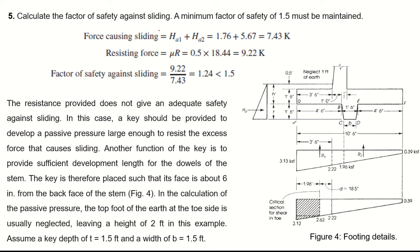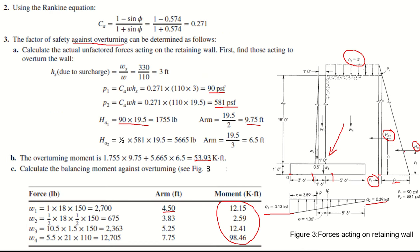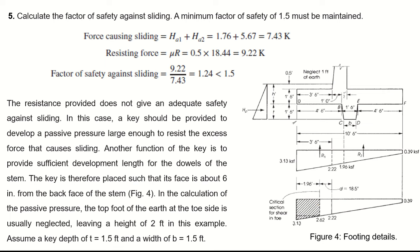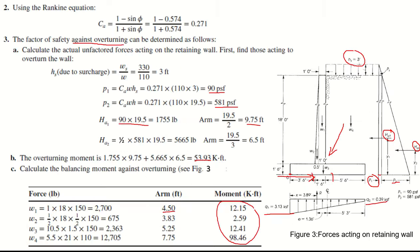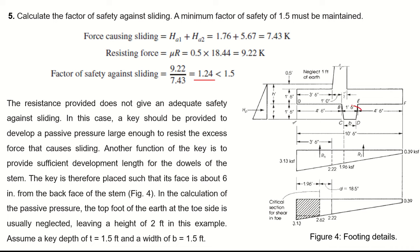Now for the factor of safety against sliding. A minimum FS of 1.5 must be maintained. Forces causing sliding are Ha1 and Ha2 (total 7.43 kips). Resisting force = mu × R = 0.5 × 18.5 = 9.22 kips. FS = 9.22/7.43 = 1.25, which is less than 1.5 — not adequate. Therefore a key must be provided.